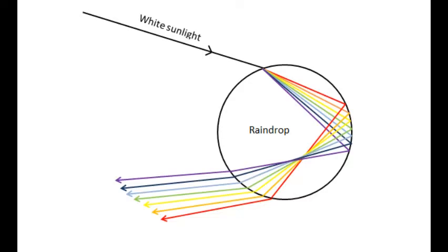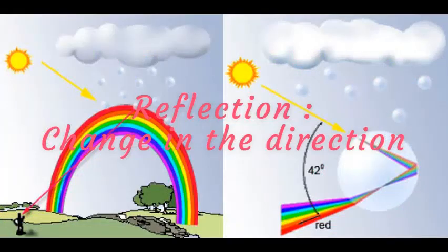Why is the rainbow always curved or circle shaped, not straight? This is because of the reflection.